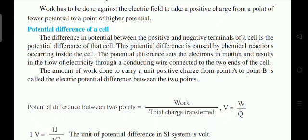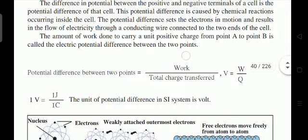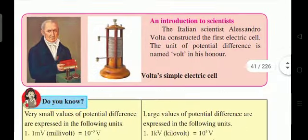The potential difference between two points is equal to work done divided by total charge: V = W / Q. The unit of potential difference in S.I. is the Volt.